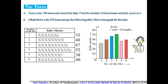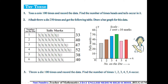Now try this: throw a die 100 times, record the data, and find the number of times each of 1, 2, 3, 4, 5, and 6 occur. Copy the question and try it yourself.